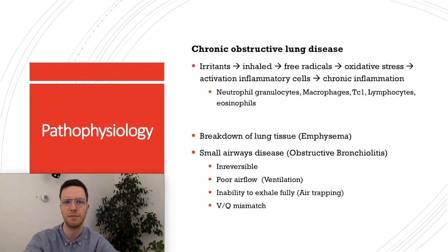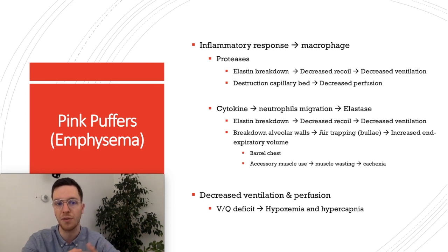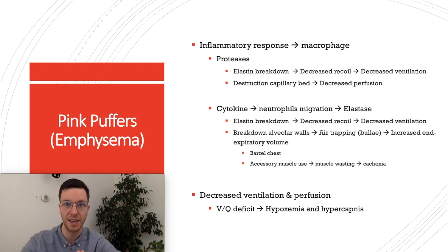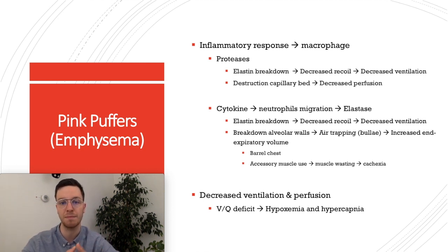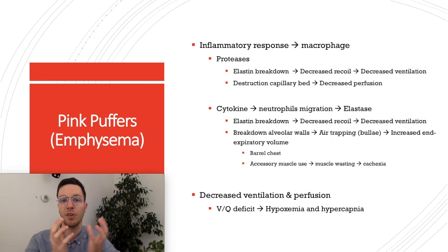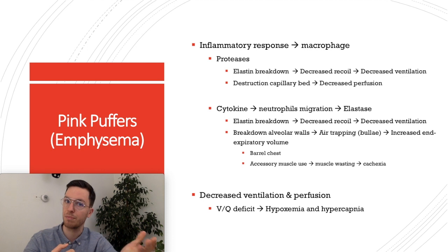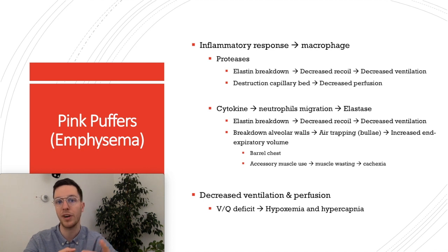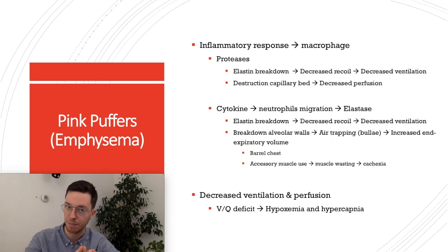Let's look at the pathophysiology of the pink puffers — how do you get emphysema with COPD? Emphysema is mostly caused by the inflammation process in the lungs, which leads to the activation of macrophages that start making proteases and cytokines. Those proteases lead to the breakdown of elastin, a component of your alveolar wall that helps it expand and recoil when you exhale. By breaking down the elastin, you get decreased recoil and therefore decreased ventilation — it's harder for air to get in and out. Additionally, those proteases destroy the capillary bed around your alveoli, decreasing perfusion.